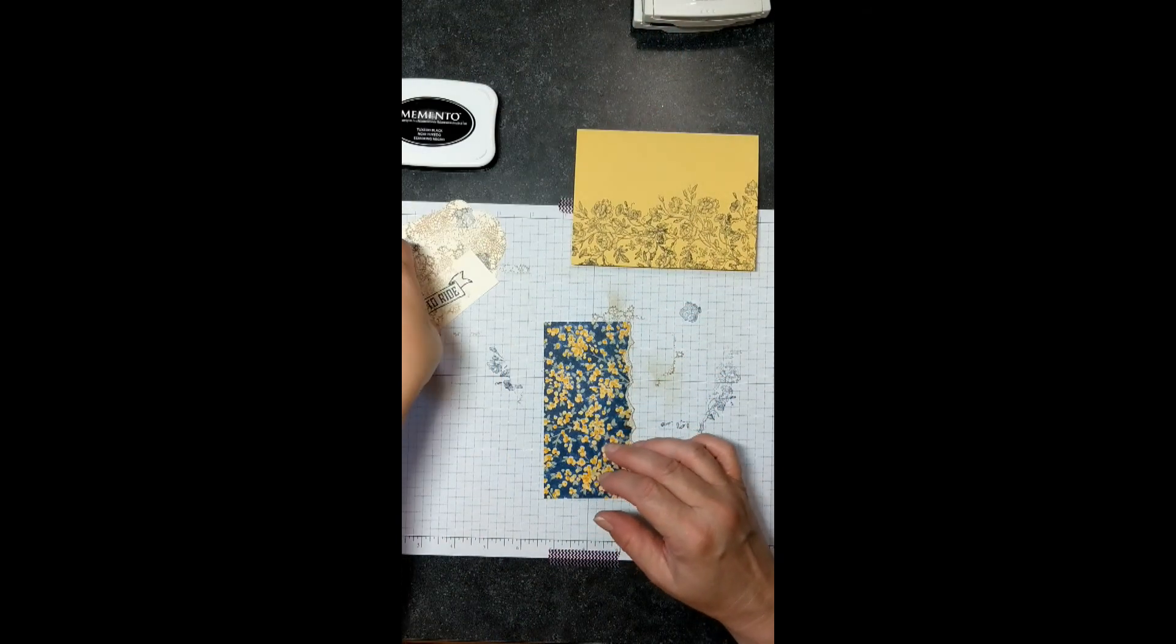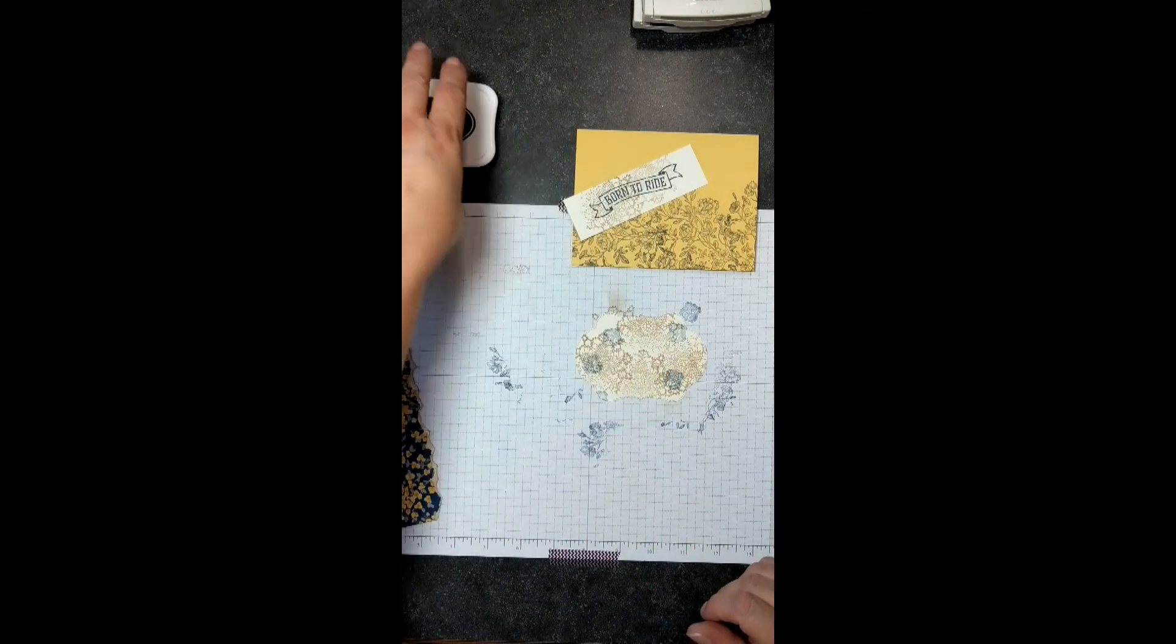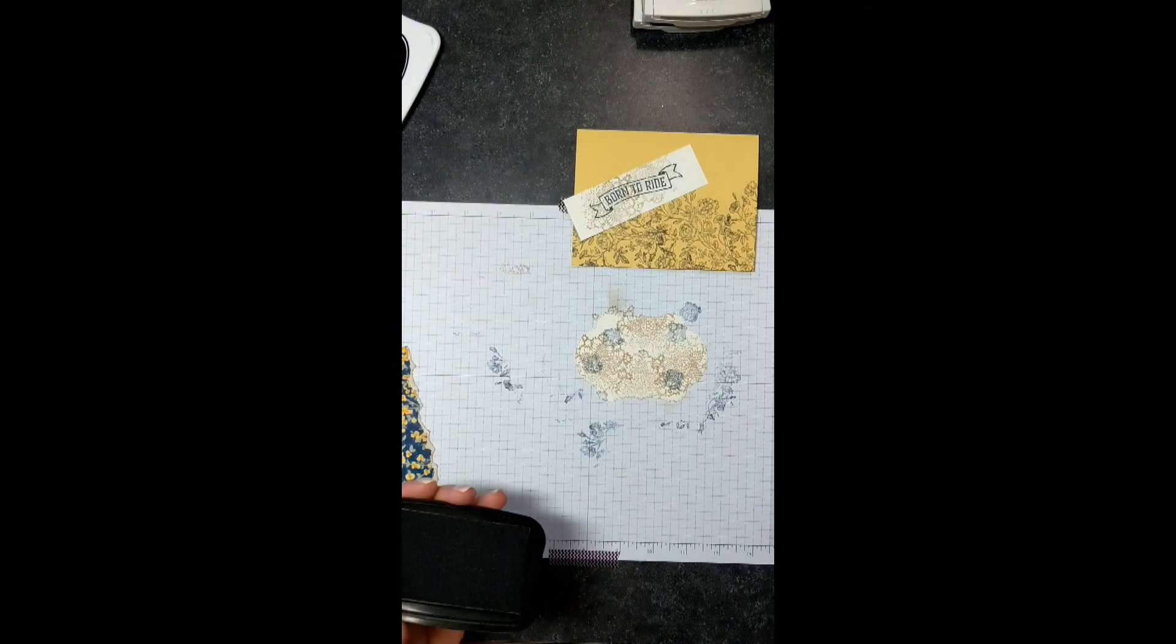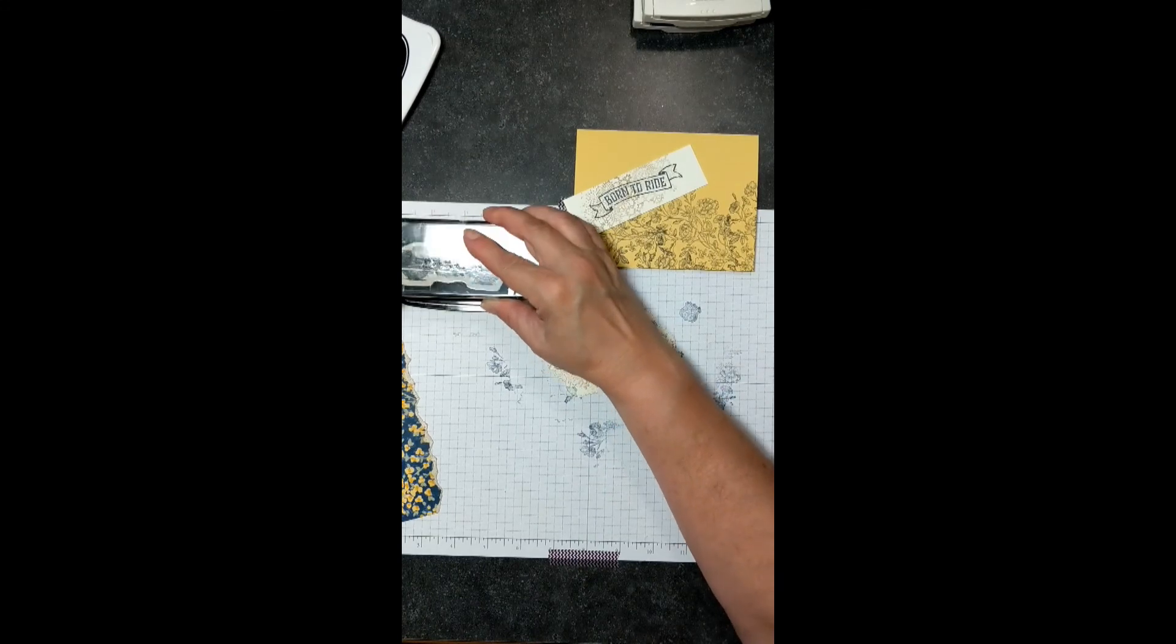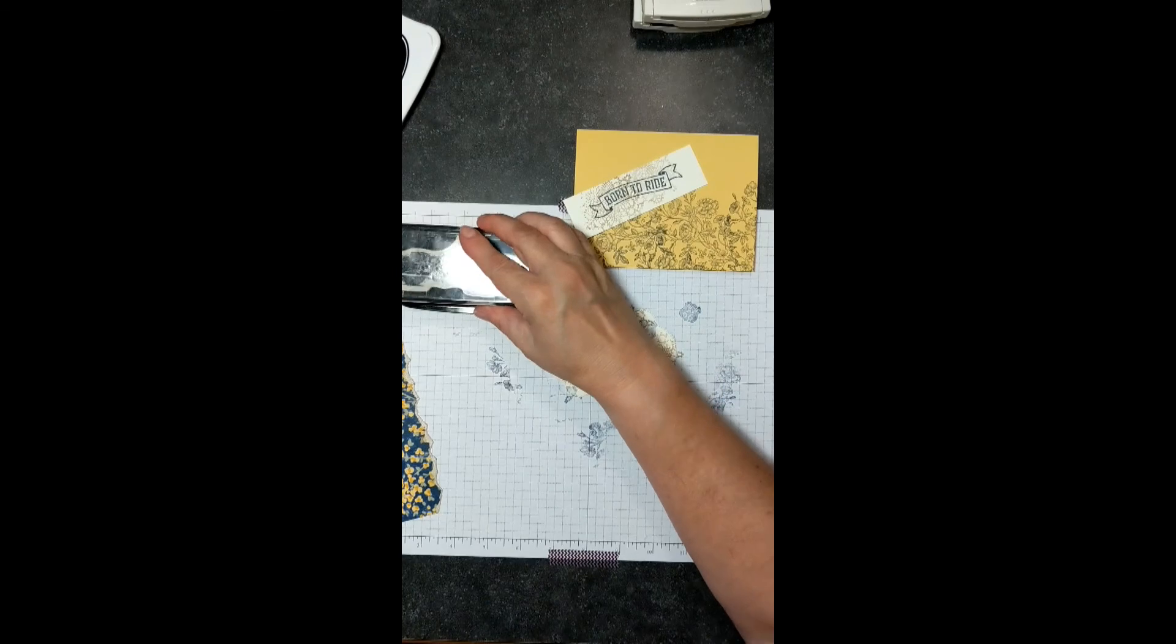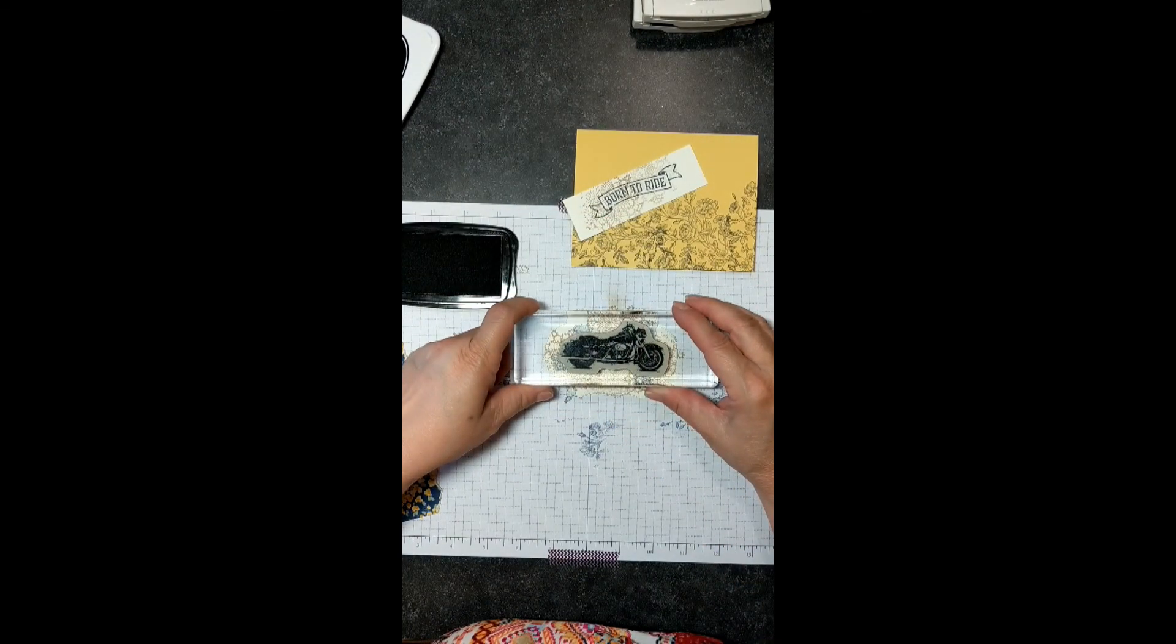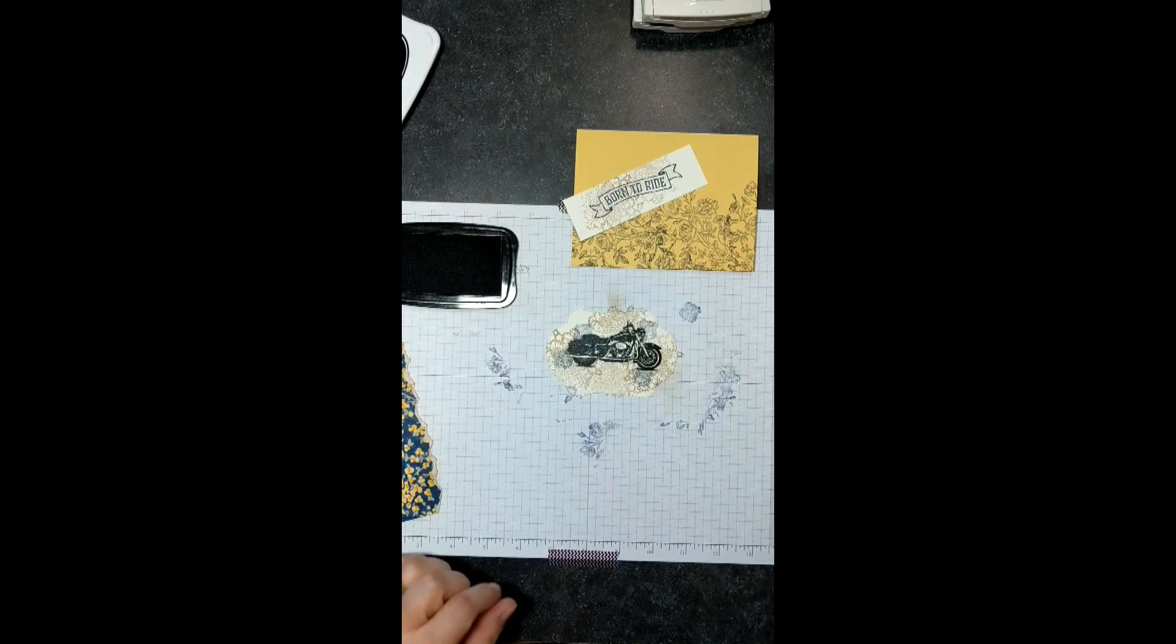Finally, we want to stamp our motorcycle. I'm using the Memento Tuxedo Black. Make sure you really get your stamp inked up well. That always makes the difference in your image. I always just flip mine over to double check. I'm going to line that up about right there. Again, giving it a good press. There we go. On to assembly.